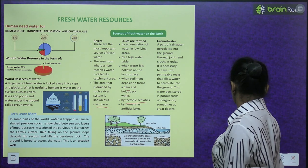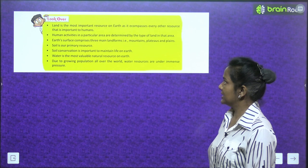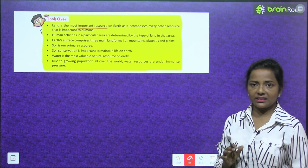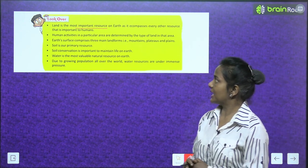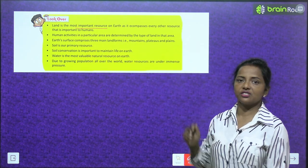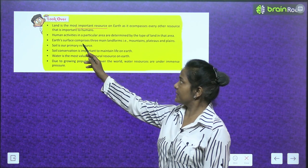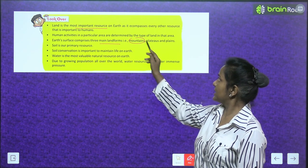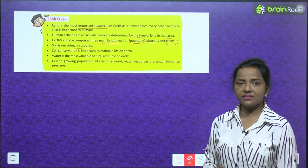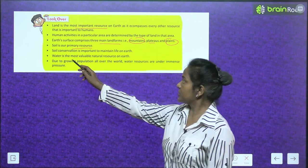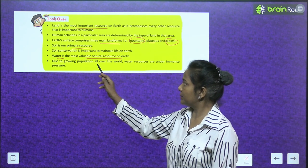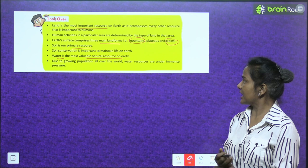Chapter summary: Land is the most important resource on earth as it encompasses every other resource important to humans. Human activities in a particular area are determined by the type of land in that area. Earth's surface comprises three main landforms: mountains, plateaus and plains. Soil is our primary resource, and soil conservation is important to maintain life on earth. Water is the most valuable natural resource on earth; due to growing population, water resources are under immense pressure.